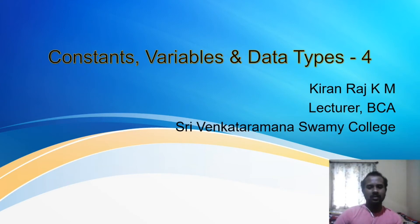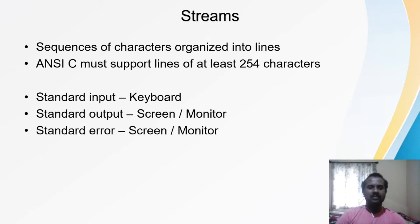Good morning, I am Kiran Raj. Welcome to the online classes on problem solving using C. Today we will be discussing the second part of constants, variables, and data types. In this class we will see different input and output operations. A stream is a sequence of characters organized into lines. C supports lines of at least 254 characters.